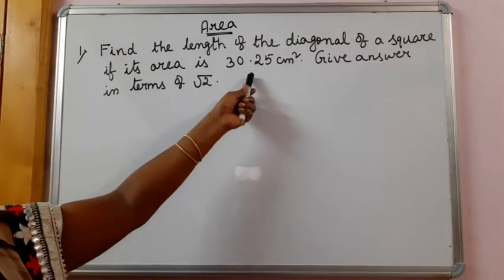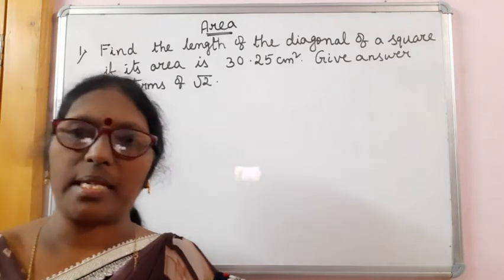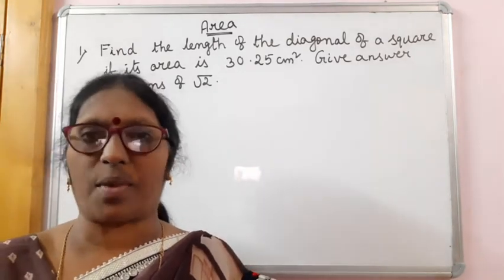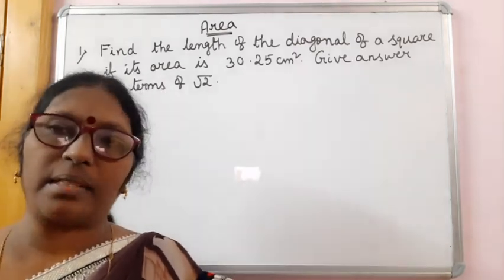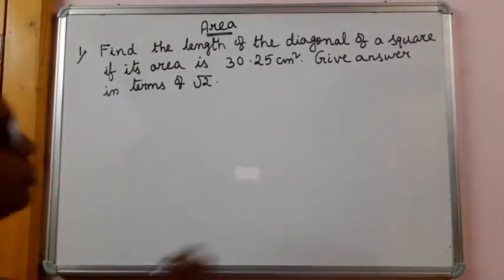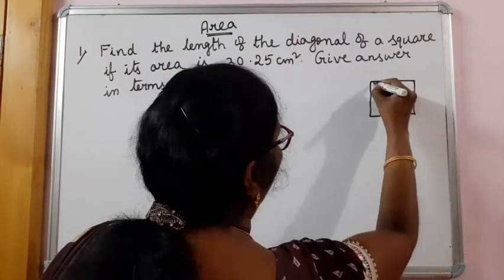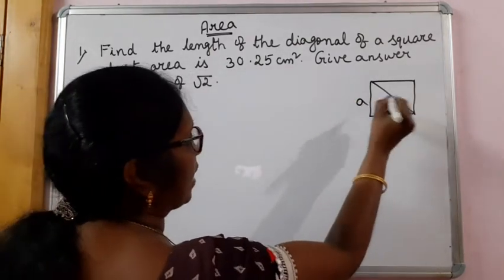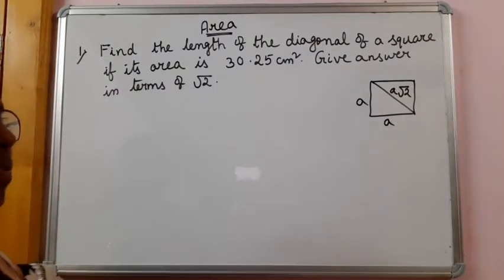If the area of the square is given to us, we have to find the diagonal of the square. We know that the formula for finding the area of the square is side squared. By using that formula we can find the side, and after finding the side we can find the diagonal of the square. If the side of the square is A units, the diagonal is A root 2 — that you have already learnt.